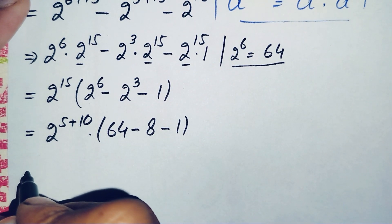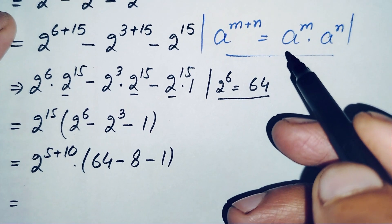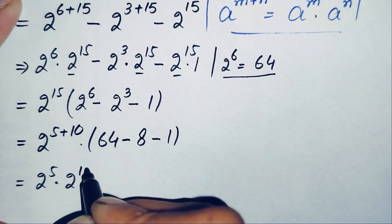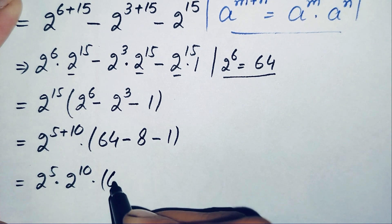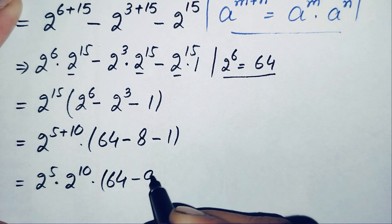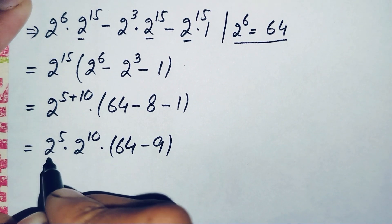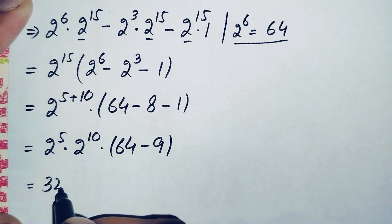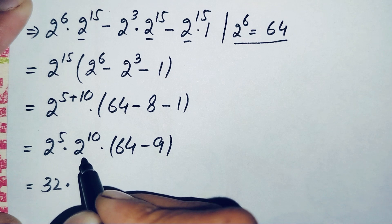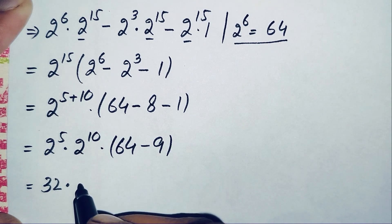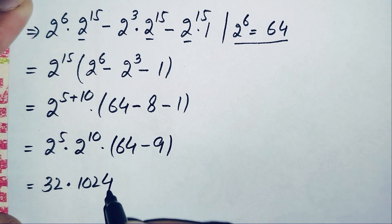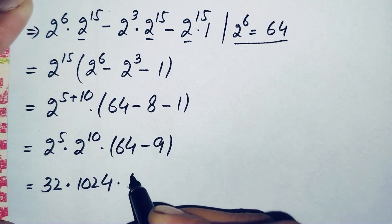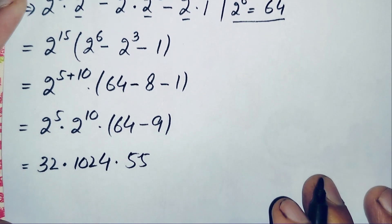To simplify further, we use the exponential identity to split the power of 15: 2^15 = 2^5 times 2^10. The bracket gives 64 minus 8 minus 1 equals 55. Substituting the values: 2^5 equals 32, and 2^10 equals 1024, which is a very famous number we mostly use in our videos.